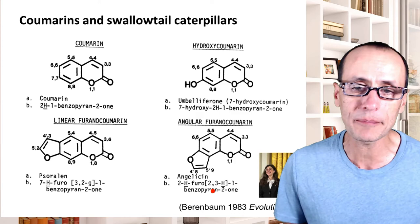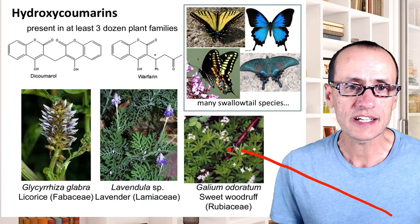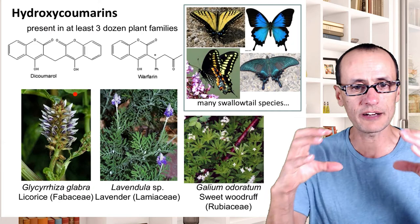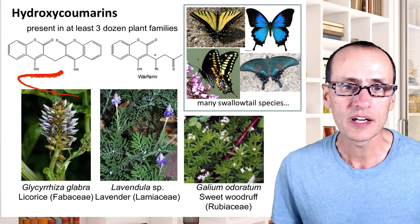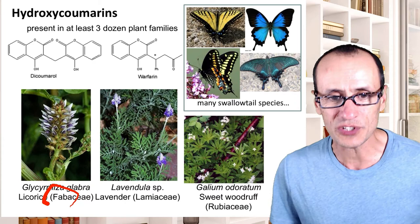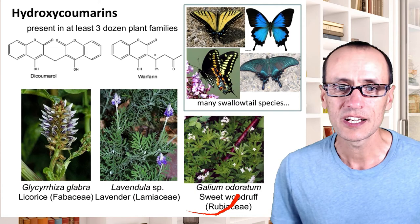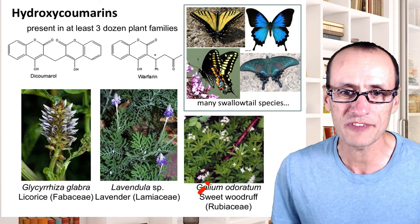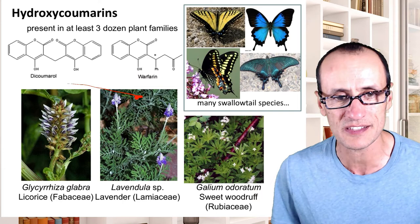May made the observation that hydroxycoumarins — the simplest modification of the coumarin motif — are present in a lot of different families, some three dozen families, including plants like licorice in the bean family, lavenders in the mint family, the Rubiaceae, bedstraw family, and many different butterflies and their caterpillars actually feed on these chemicals. You might even recognize warfarin — a blood thinner used for treating strokes or heart attacks.